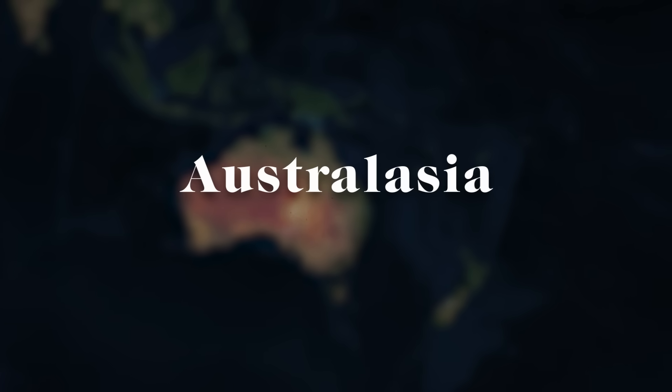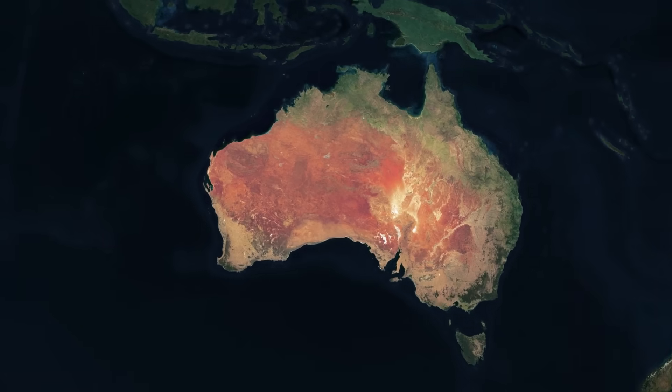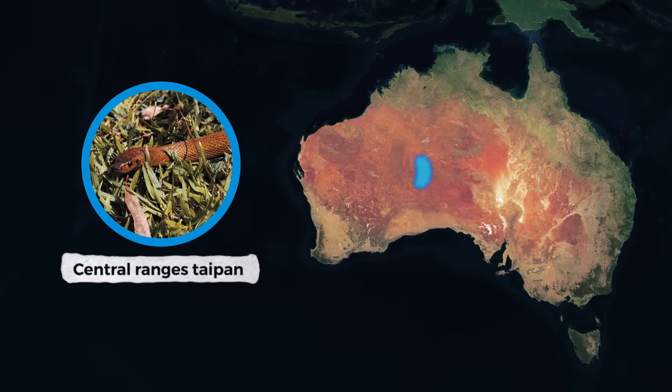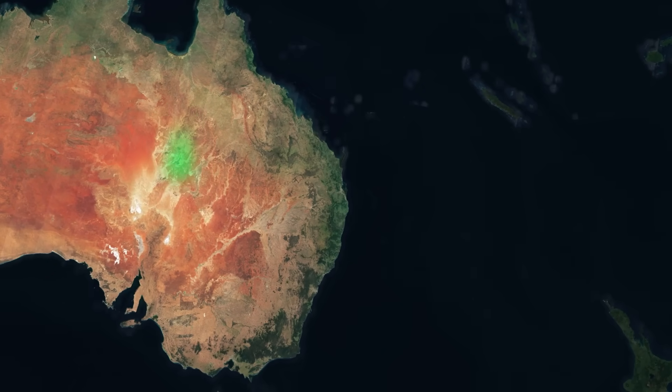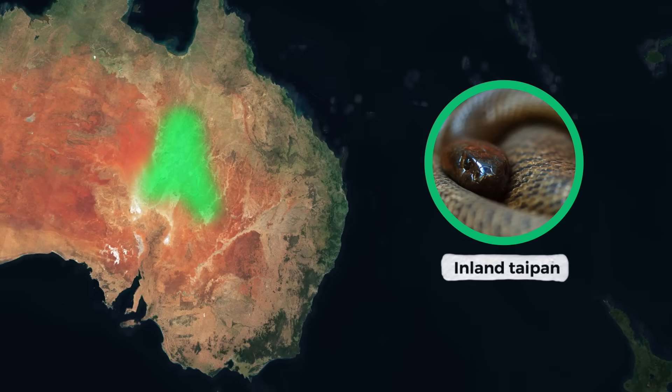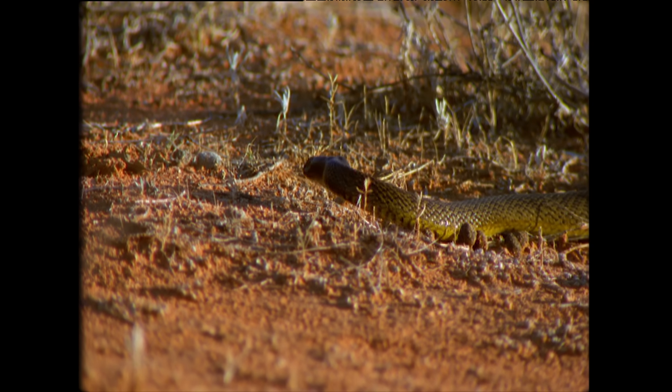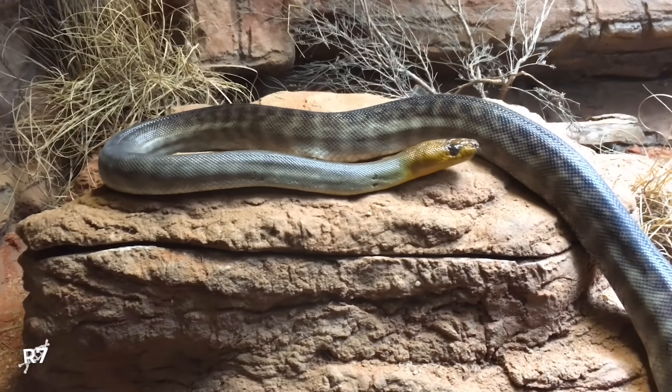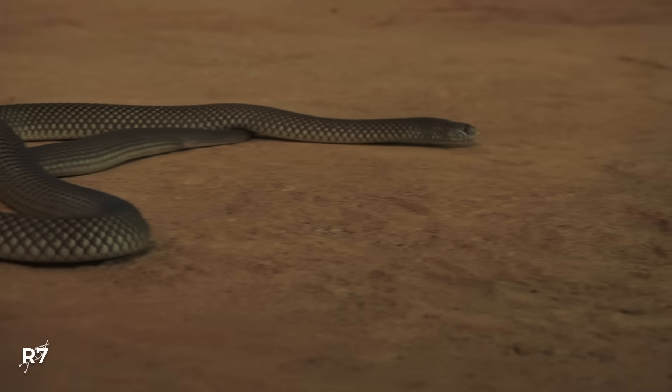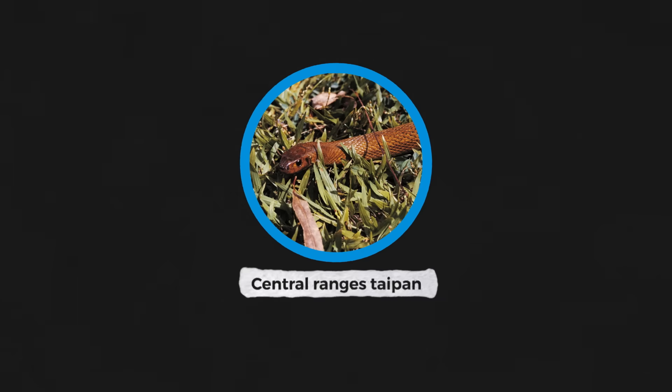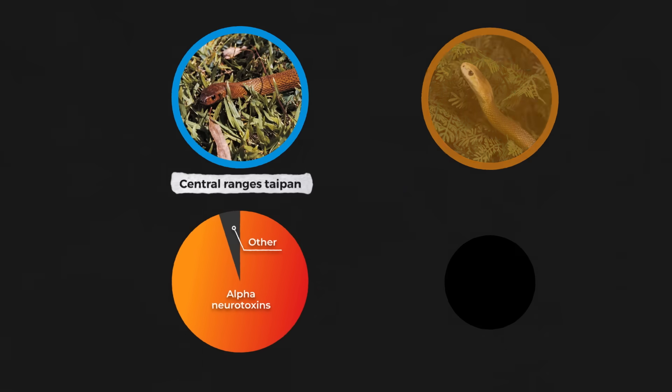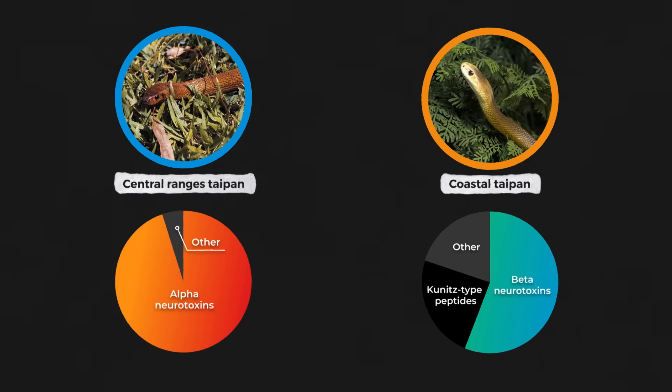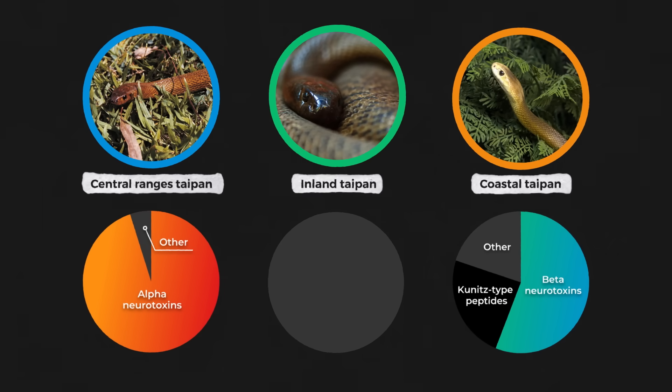Let's take the three Australasian taipans as another example. The central ranges taipan, found in the mountainous regions of western Australia, the coastal taipan, found along the east coast of Australia and the southern border of Papua New Guinea, and of course the inland taipan, found in the outback of western Queensland. Each species survives on an entirely mammalian diet, and they all eat similar sized animals, but there are surprising variations in the composition of their venoms. The central ranges taipan, like the black mamba, has venom made up from almost entirely three-finger alpha neurotoxins. Coastal taipan venom, as we saw before, is mostly made up from phospholipase beta neurotoxins, and the inland taipan has a deadly combination of both of these types of neurotoxins.